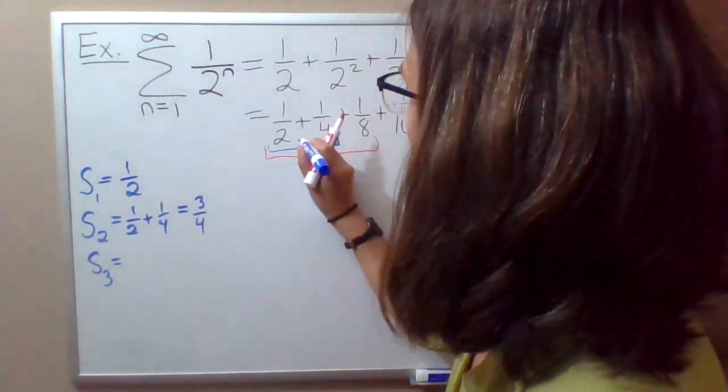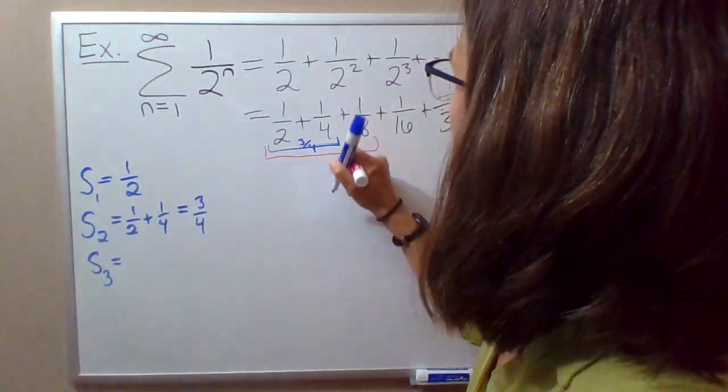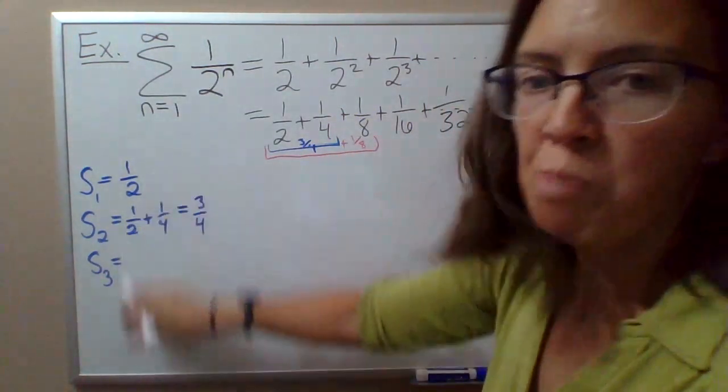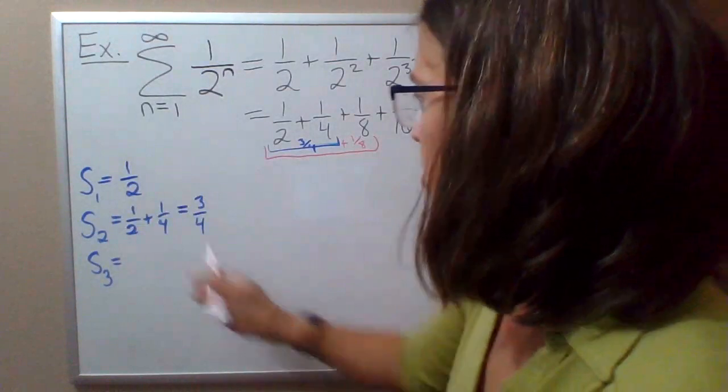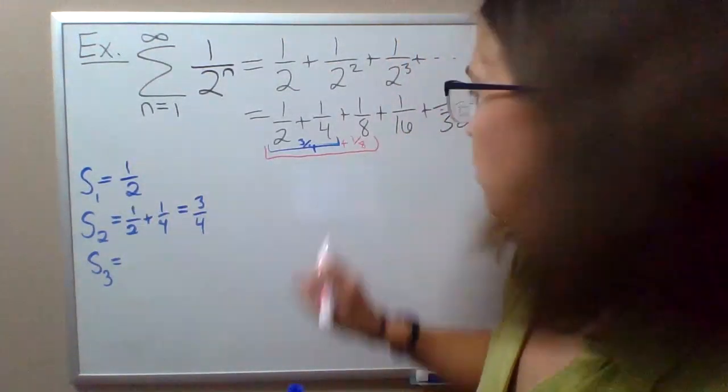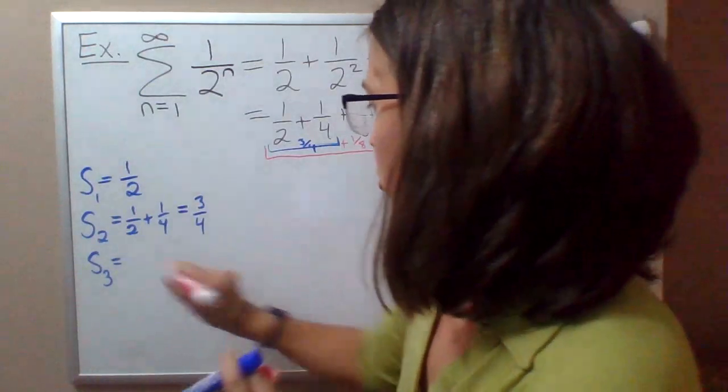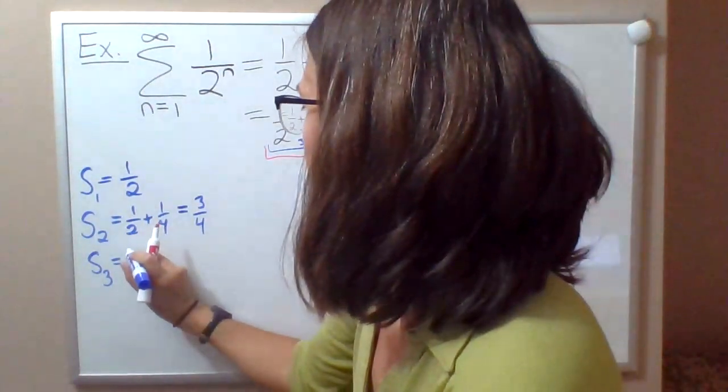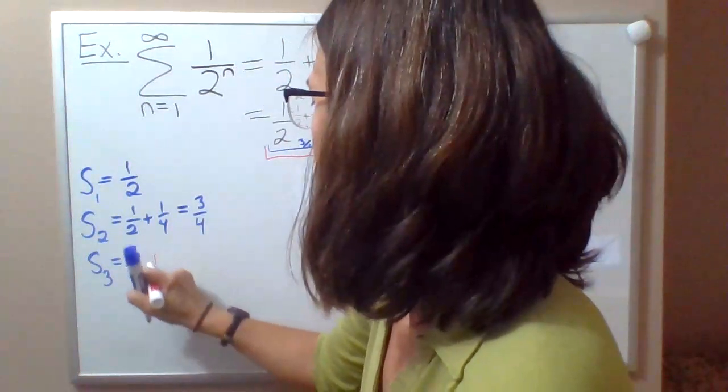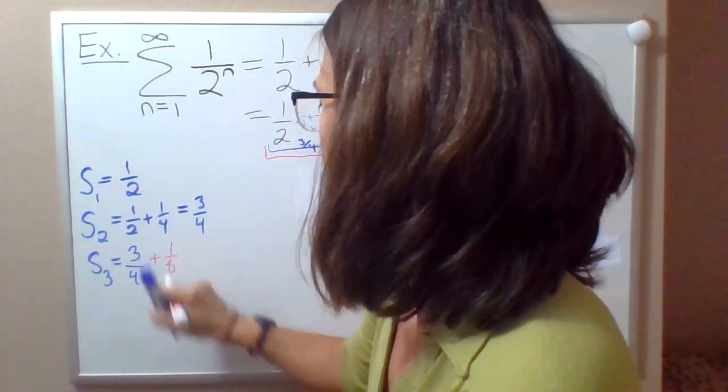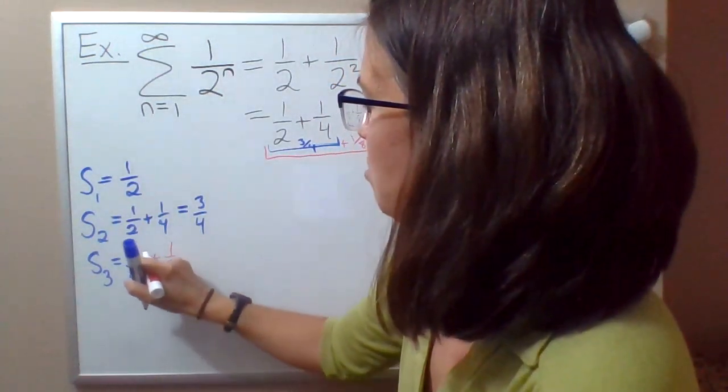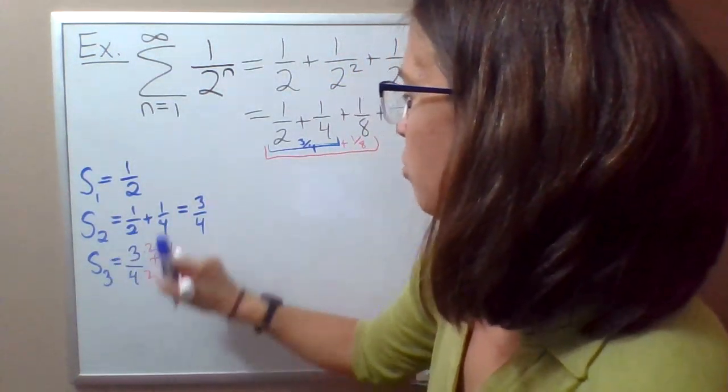So really you just need to add 1/8. The sequence of partial sums really is a recursive sequence—you're just taking your previous sum and then adding the following term. So the sum of the first three terms will be 3 fourths from the sum of the first two terms plus the next term, which is 1/8. If I get a common denominator, this would be 6 over 8 plus 1 over 8, so 7 over 8.